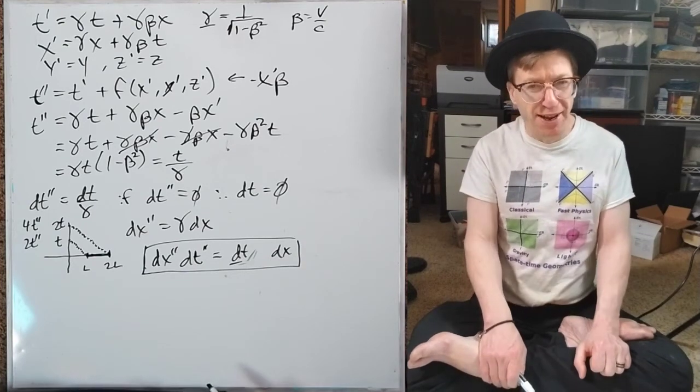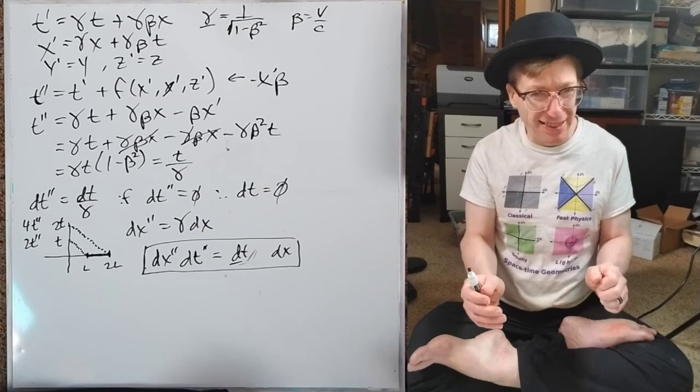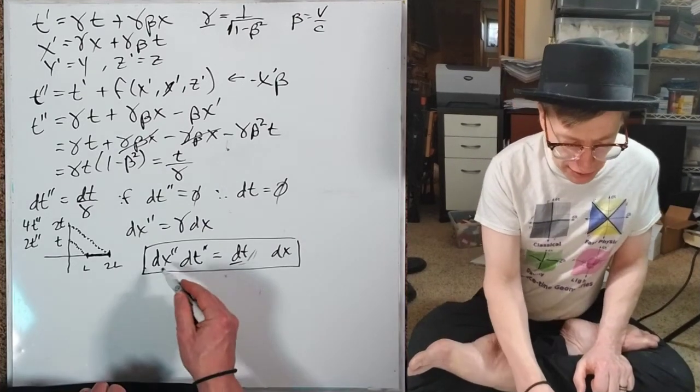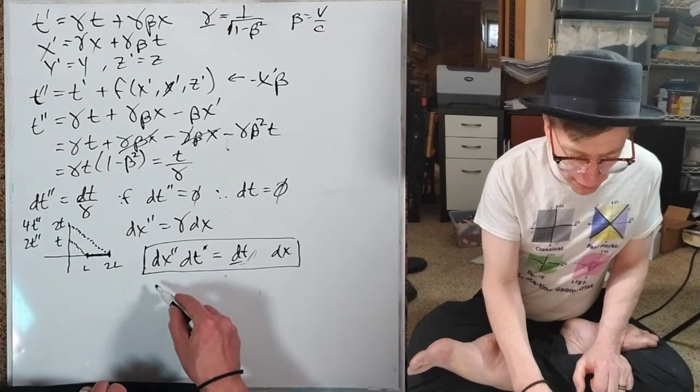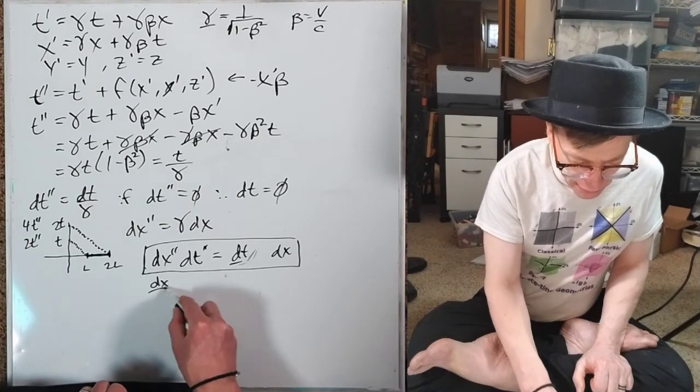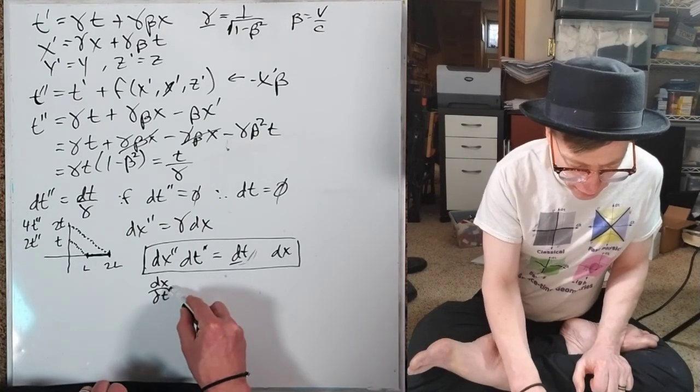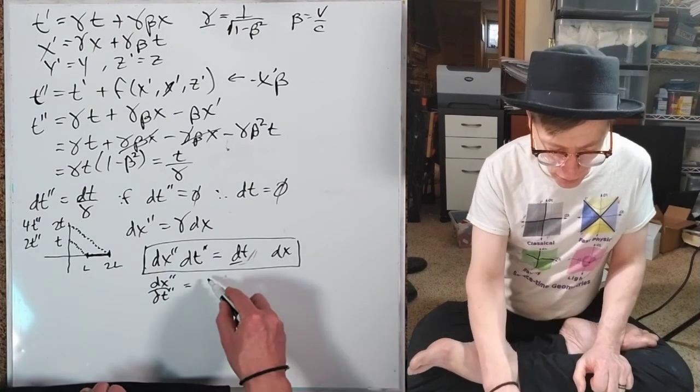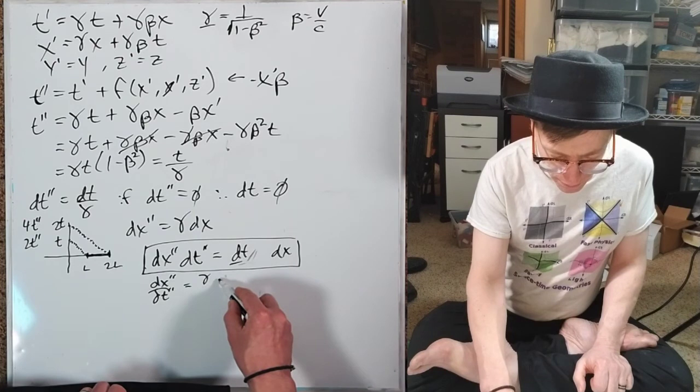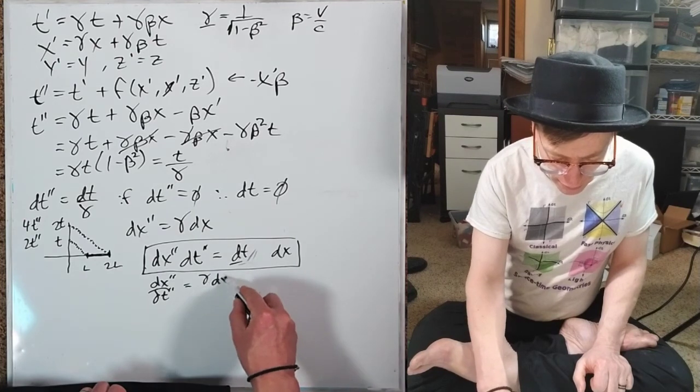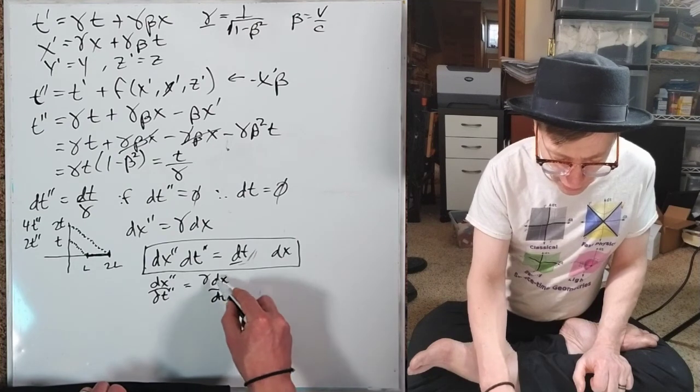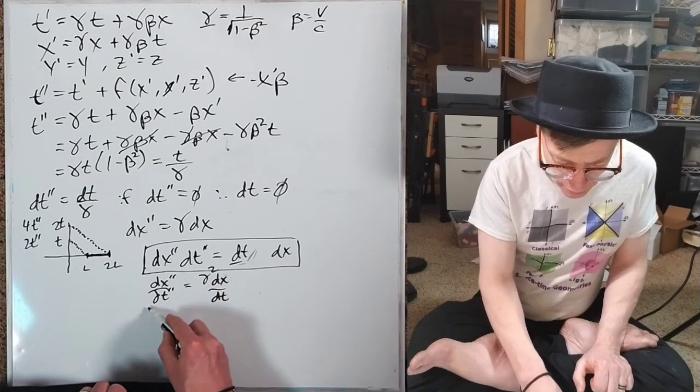But you say, I bet the whole speed of light thing, I bet that doesn't work out. That would be the ratio of the changes in space to time. So that would be dx/dt''. And that equals, we get a γdx and we get a dt one over γ. So we get a γ².